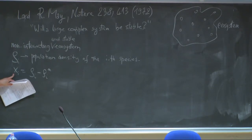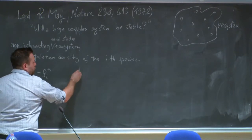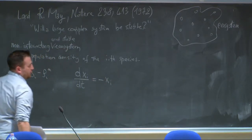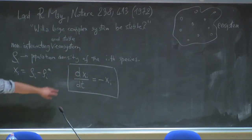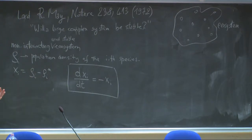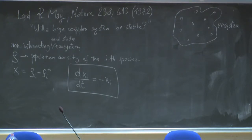The simplest model for this decay to zero is a system of differential equations: dx_i/dt = −x_i, where x_i is the deviation from equilibrium. We are saying the deviation from equilibrium decays exponentially to zero as time gets large. This makes sense: if you have a non-interacting stable ecosystem, each deviation for each species from equilibrium would spontaneously decay to zero as time goes on.